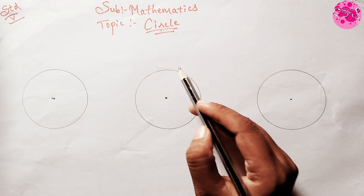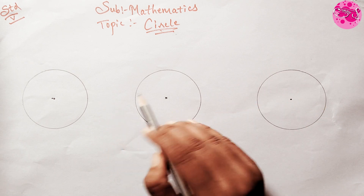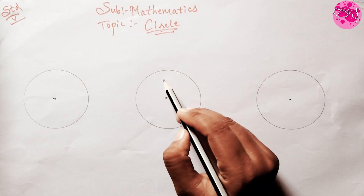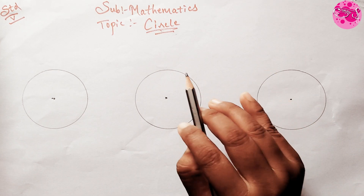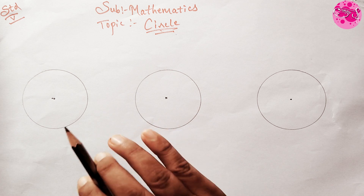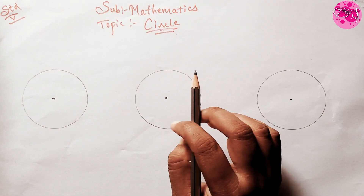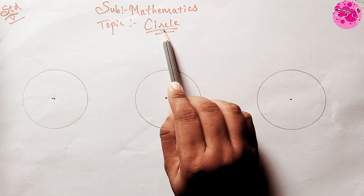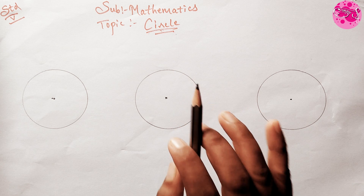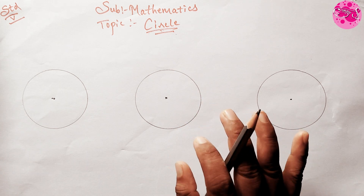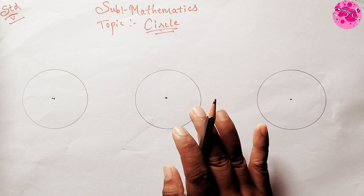Do you know the circle also has various types, and do you know how to draw a circle? If not, then today I'm going to teach you a new chapter from our fifth standard mathematics book — Chapter 7: Circle.